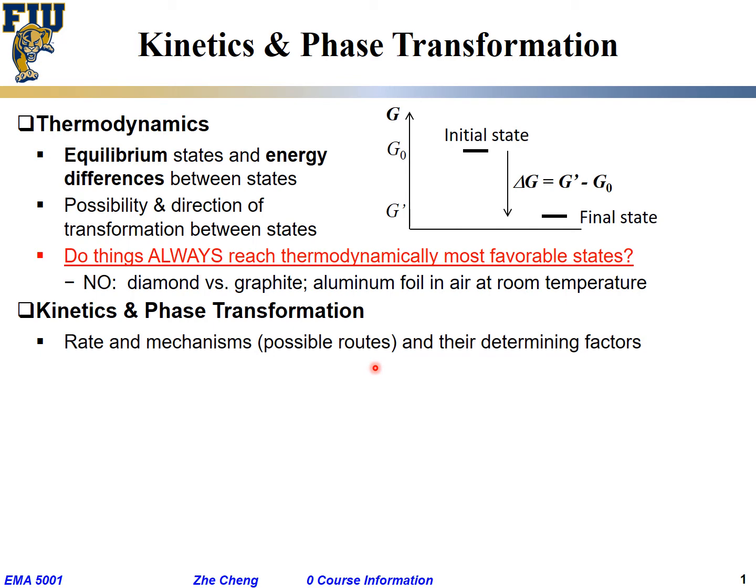You know from one place A to another place B, there could be many many different routes, right? Even if I go from this room to my office, I can take the elevator, I can walk, and even if I walk, I can take many different routes, right? Initial state, final state are fixed, but there are many, actually infinite possibilities of routes. This class is about the possible routes, the so-called mechanism. Which route is the most likely route? Which route is the fastest route? Make sense? And there are so-called factors that determine this route.